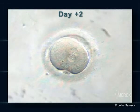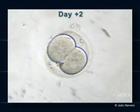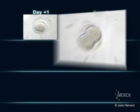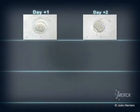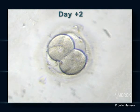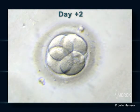Two days after puncture, the embryo divides itself and contains two cells with one nucleus per cell, which, in turn, starts to divide into an embryo of four cells if its development is optimal.